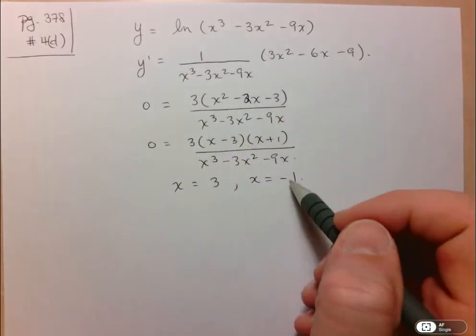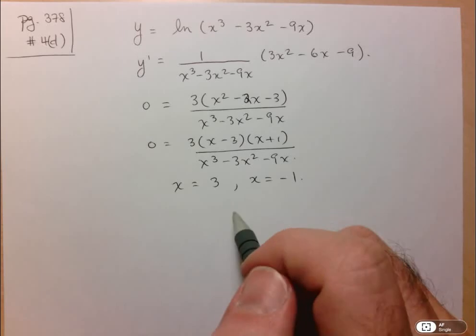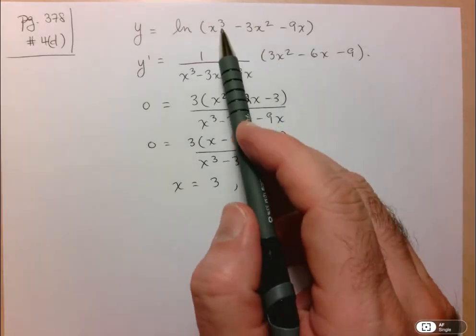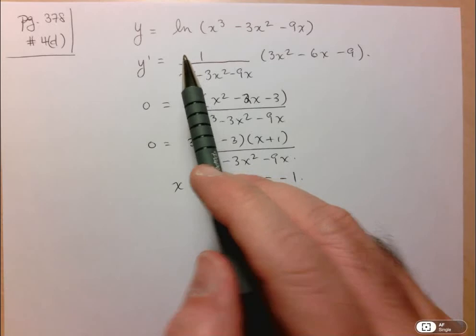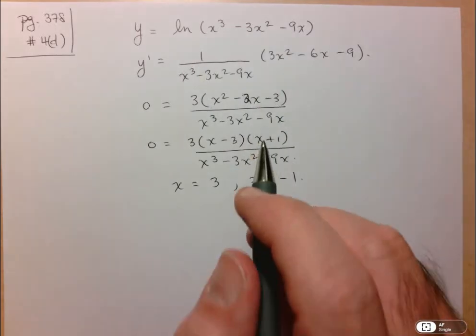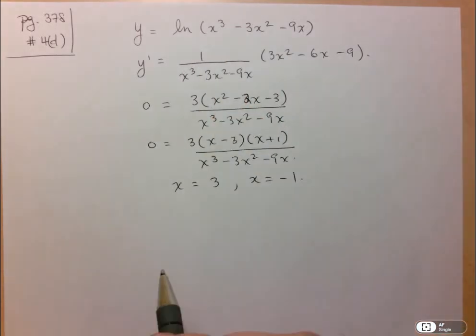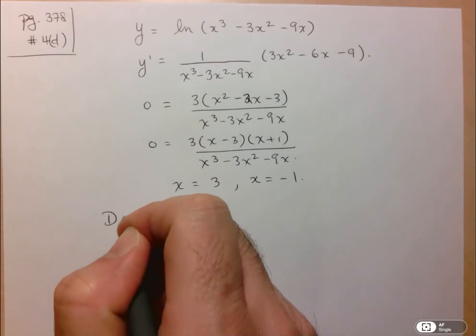So it could be that one of these two numbers or both of those numbers give us a negative or 0 input to a logarithms function. And that would mean function wouldn't exist there. So I'm going to determine the domain of the function.